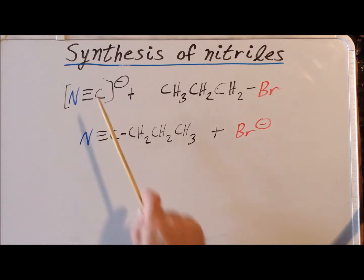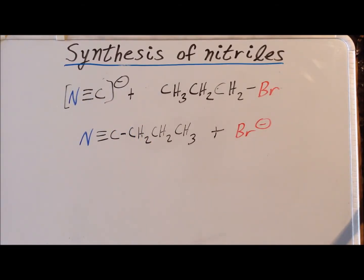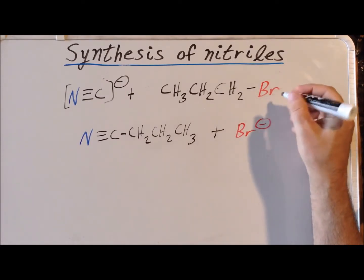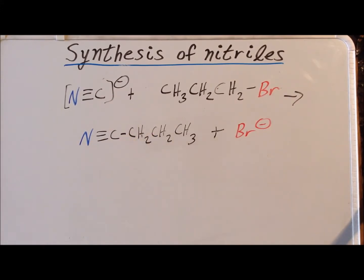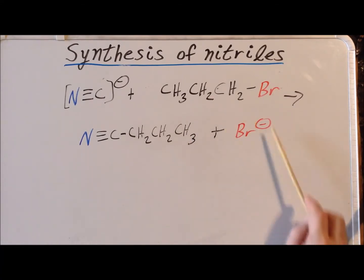We are going to look at the nucleophilic attack of cyanide on 1-substituted propanes. For example, here we have 1-bromopropane, and as we'd expect, the product of the reaction is going to be butanenitrile, or butyronitrile, and bromide as the leaving group.